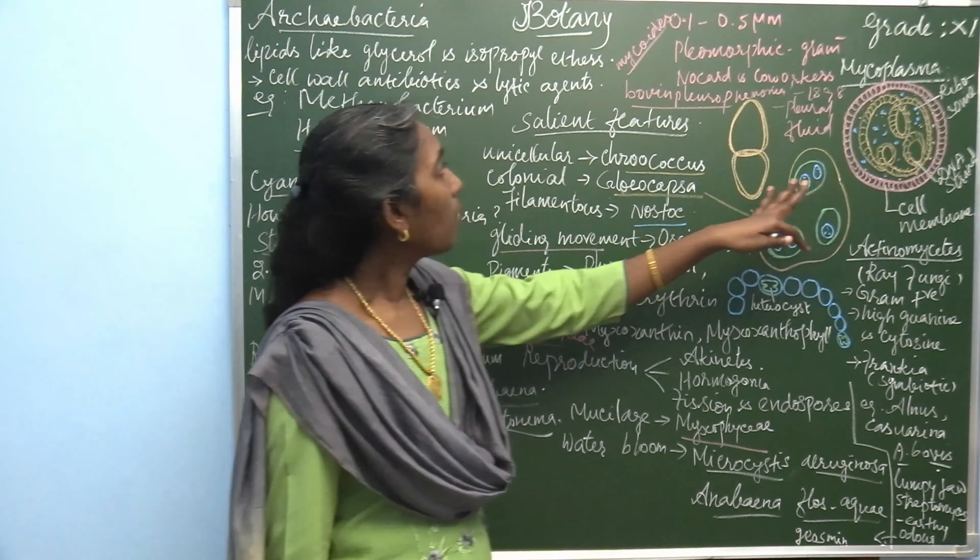Many Actinomyces species show symbiotic relationships. Frankia shows symbiotic association with Alnus and Casuarina. Actinomyces bovis lives in the jaw and causes lumpy jaw disease.